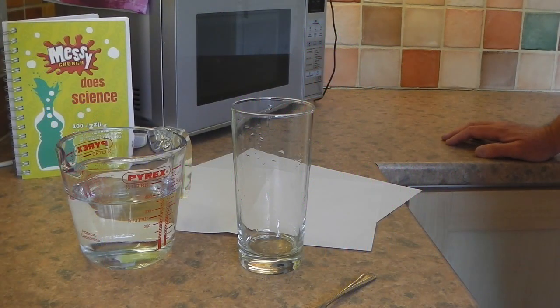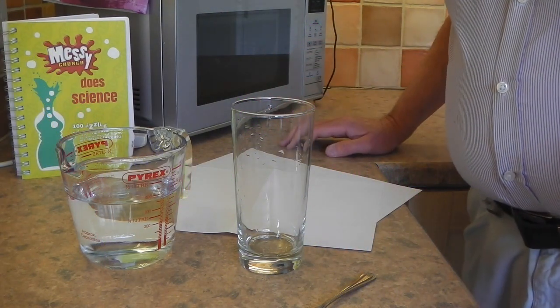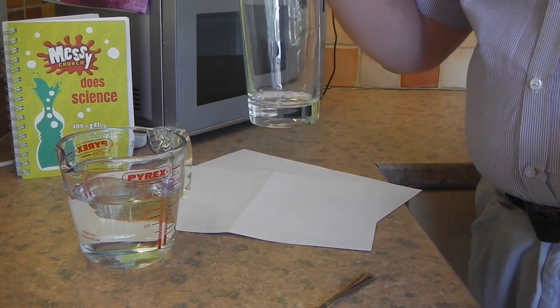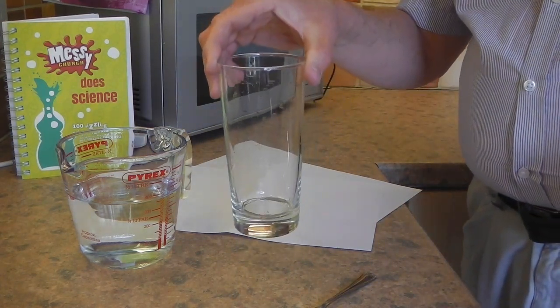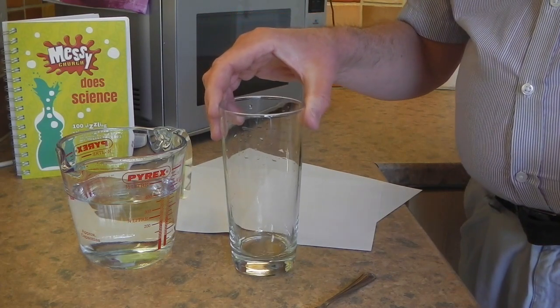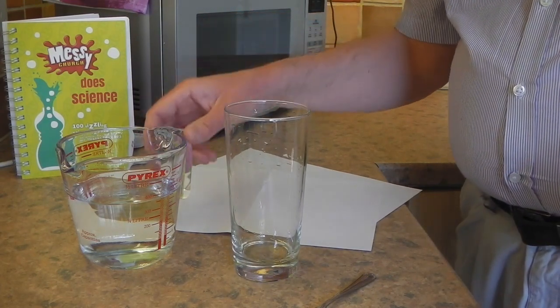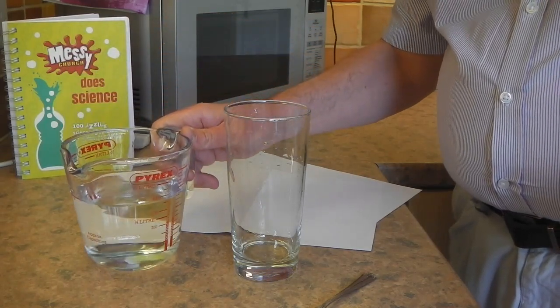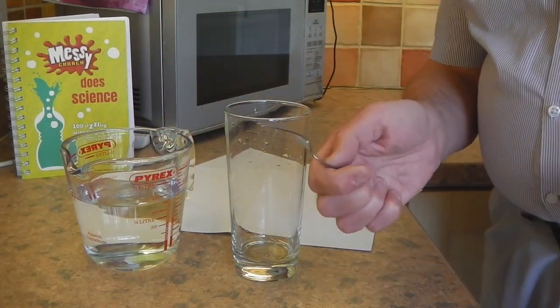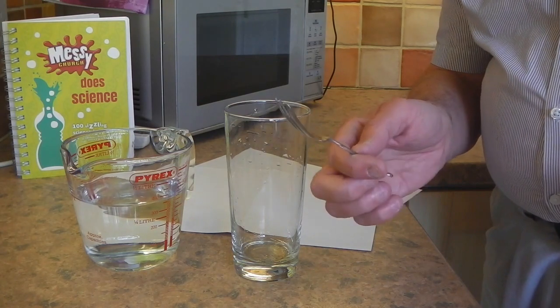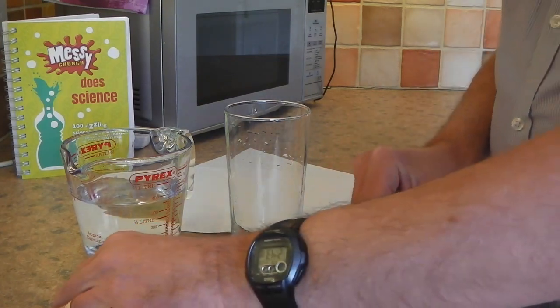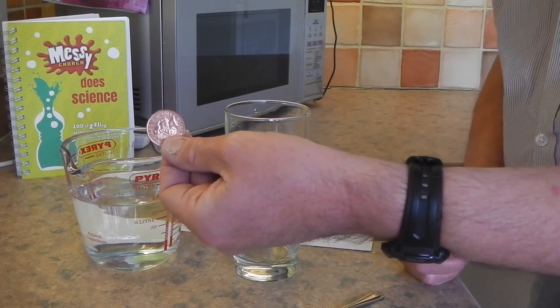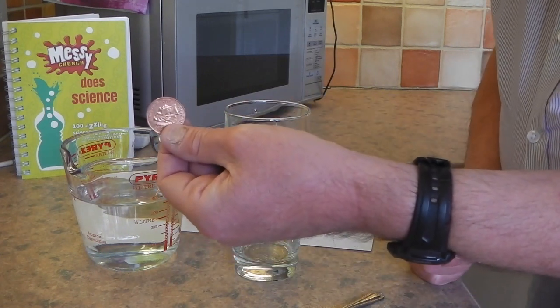For this experiment, you just need a few simple things that you can get from your kitchen. You need a glass, preferably it's got to have flat walls, but a little curvature wouldn't matter. You need some water, this is just cold water in a jug. A small fork or spoon, I'm using a dessert fork for this experiment. And a 2p coin or a 1p coin, actually any coin will do,